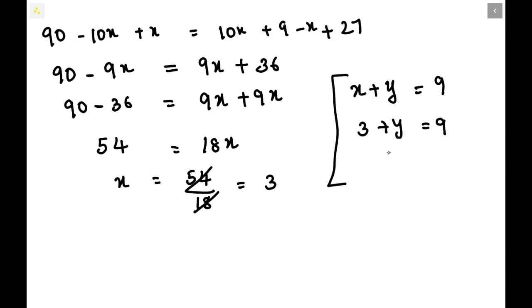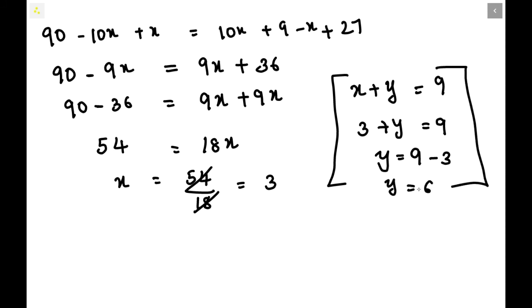We have x plus y equals 9, and we found x equals 3. So 3 plus y equals 9. Transposing, the 3 moves to the RHS and becomes minus 3: y equals 9 minus 3, so y equals 6. We have found x equals 3 and y equals 6.